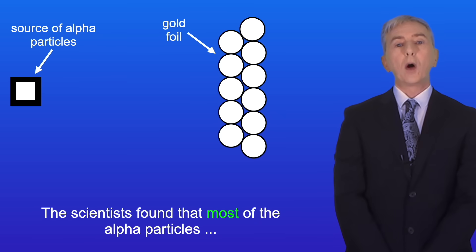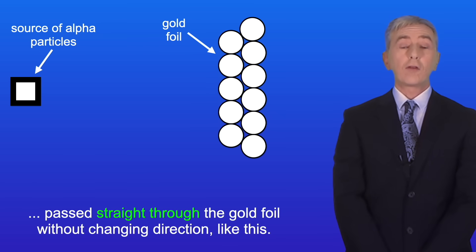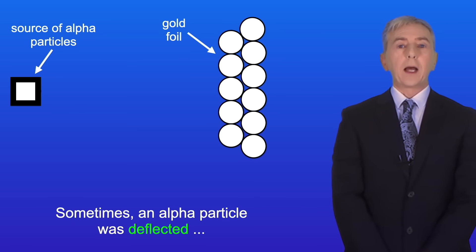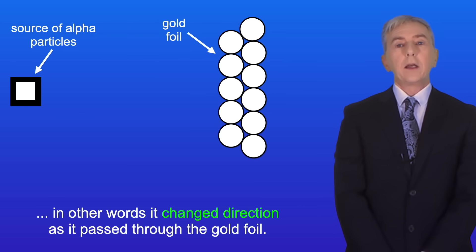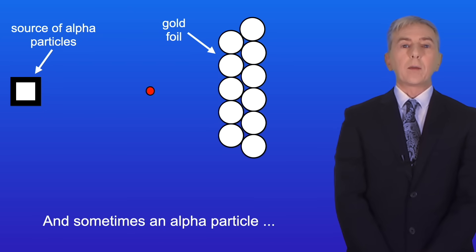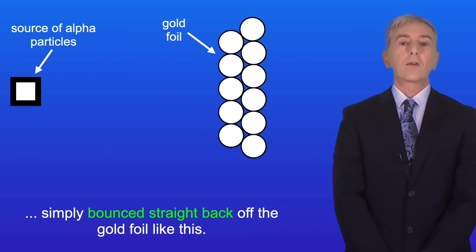The scientists found that most of the alpha particles pass straight through the gold foil without changing direction like this. Sometimes an alpha particle was deflected. In other words it changed direction as it passed through the gold foil. And sometimes an alpha particle simply bounced straight back off the gold foil like this.